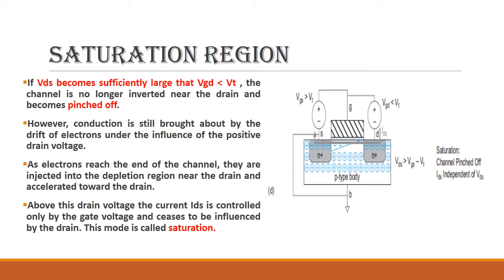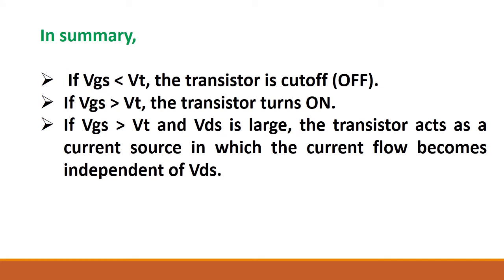In the saturation region, a very high VDS voltage is applied such that VDS is greater than VGS minus VT. The channel is pinched off near the drain, but there is a constant current flow that depends only on gate-to-source voltage and not on drain voltage. Summary: cutoff region — VGS less than VT, transistor off; linear region — VGS greater than VT with small VDS; saturation region — VGS greater than VT and large VDS.